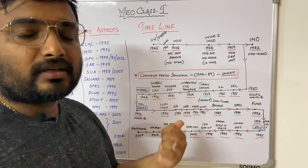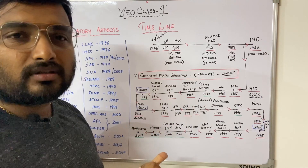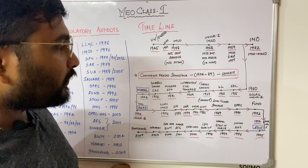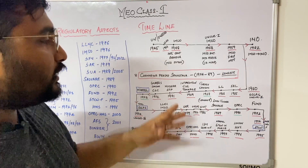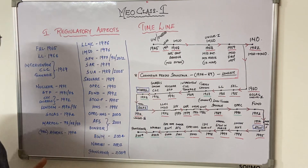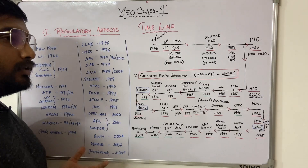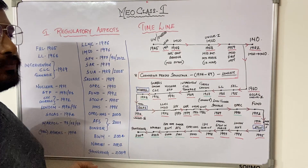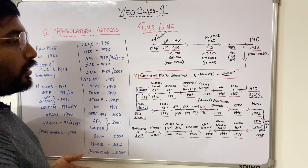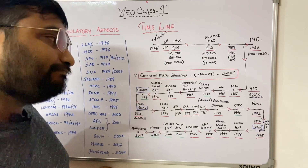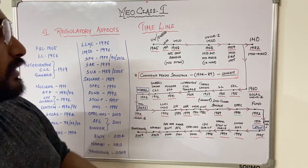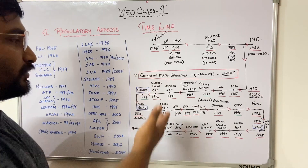The Torrey Canyon disaster happened in 1967 in London, spilling around 120,000 tonnes of crude oil into the sea. Following that, in 1969, three conventions came: the Intervention Convention, which facilitates intervention of states into oil pollution caused on the high seas; the Civil Liability Convention (CLC) for liabilities; and the Tonnage Convention for measurement of tonnage.